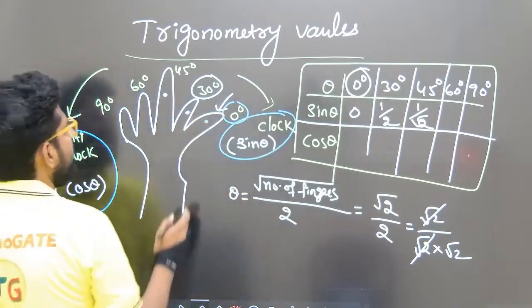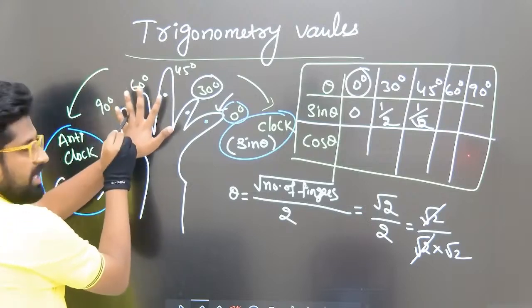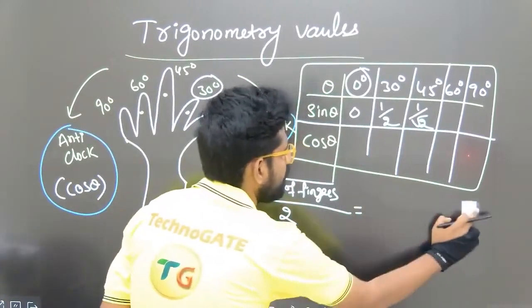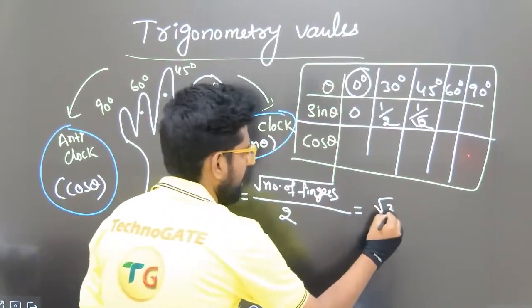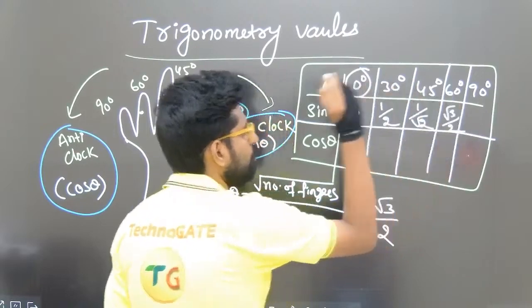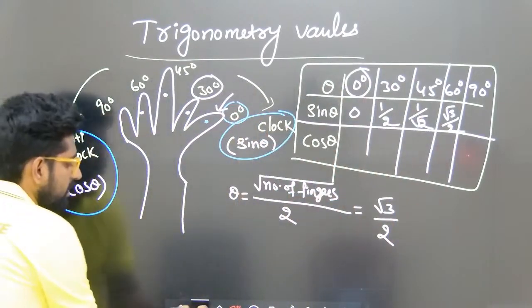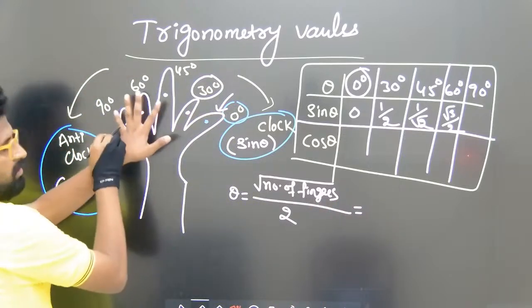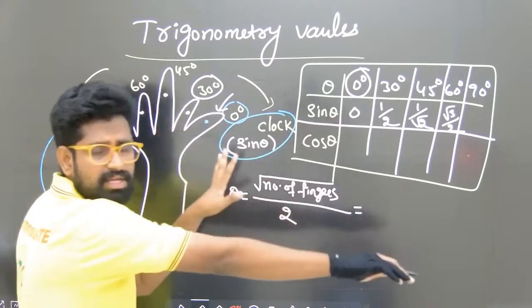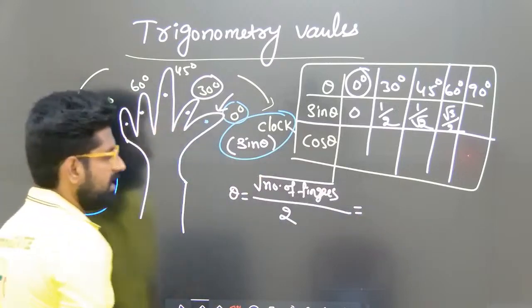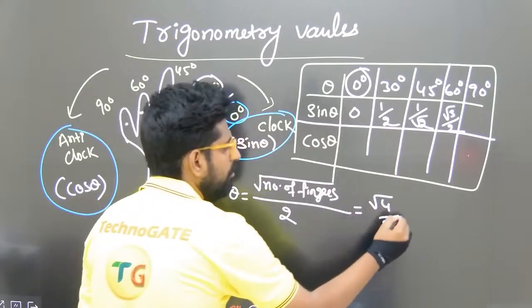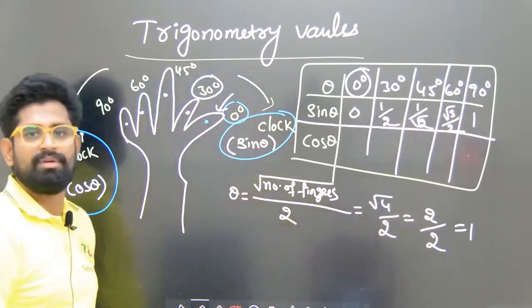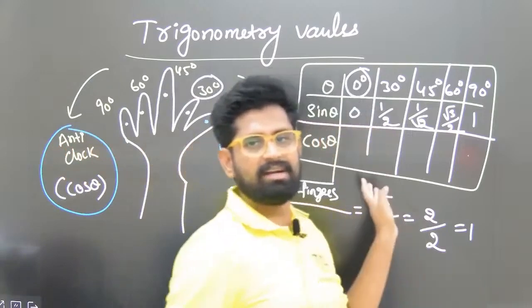For 60 degrees, my pointer is here and there are three fingers, so root 3 by 2. Hence sin 60° = √3/2. For 90 degrees, my pointer is here and there are four fingers, so root 4 by 2. Root 4 is 2, and 2 by 2 = 1. Hence sin 90° = 1. In this way we can easily write all these sin values. If we reverse these values, those are the cos theta values.